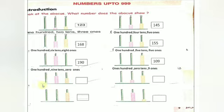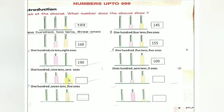Now what number does the Abacus show? One more. In the 100's place, 1 bead — so 100. In the 10's place, count children — 7 beads — so 7 tens. In the 1's place, 5 beads — so 5 ones. 100, 7 tens, 5 ones — 1, 7, 5. What number, children? 175.